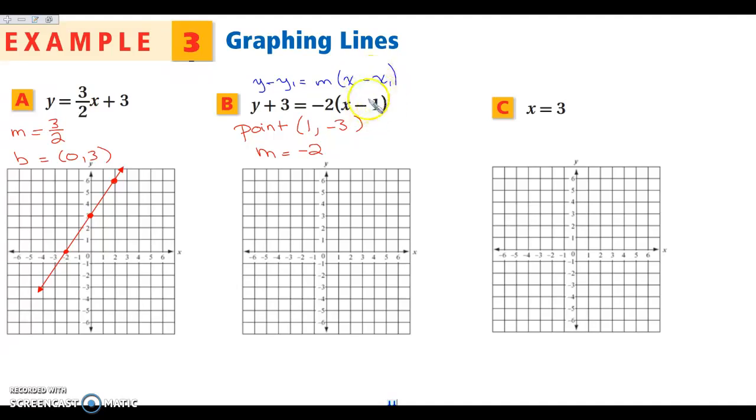So what am I subtracting here? I am subtracting a positive 1 for my x. What am I subtracting here? I'm subtracting a negative 3 for my y. So it's important that you realize that when we are in point slope form, it's going to be the opposite sign of what it looks like for your actual point.